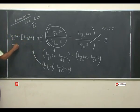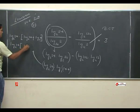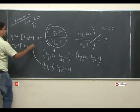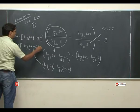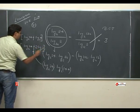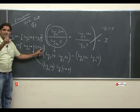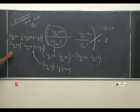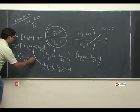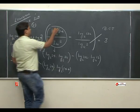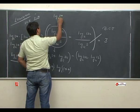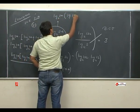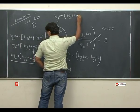अब आप देखिए — log 24 base 2, log 24 base 2, plus 4 को मैं लिखूँगा 2 की पावर 2। और 2 की पावर 2 में 2 आगे जाएगा क्योंकि जब number पर पावर होती है तो multiply होती है। log 2 base 2 क्या होगा? 1. तो finally: log 24 base 2 into log 24 base 2 plus 2. यह first expression का simplest form है: (log 24 base 2)² + 2.